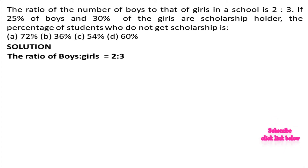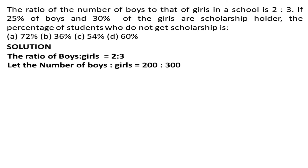To simplify, we multiply both parts of the ratio by 100. So boys become 200 and girls become 300. The ratio is 200:300. So total students = 200 boys + 300 girls = 500 students total. Now we need to find the scholarship holders.